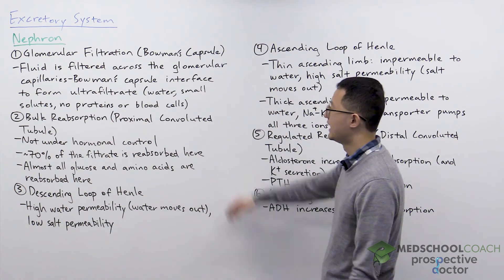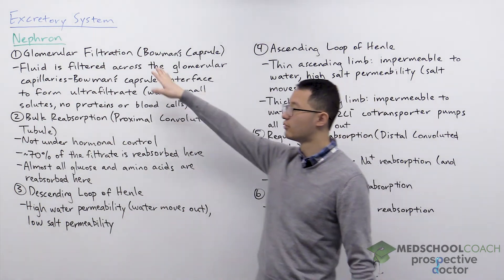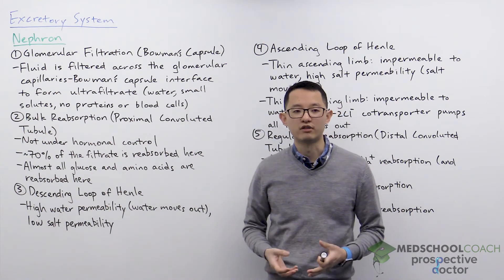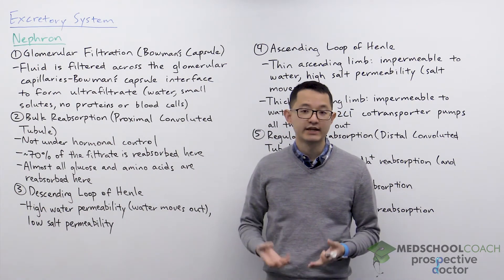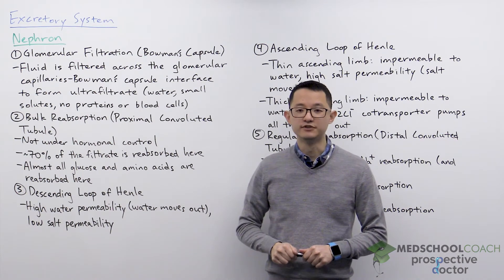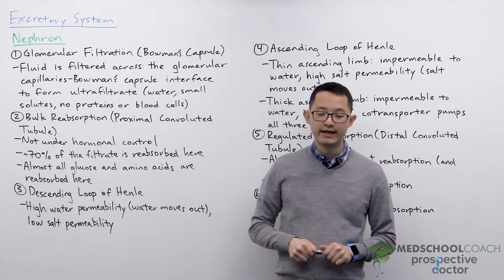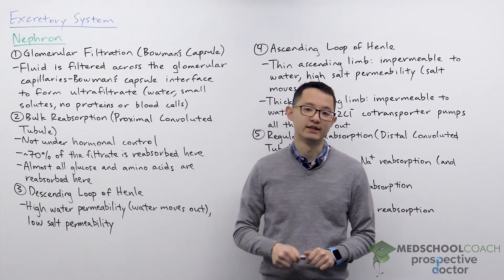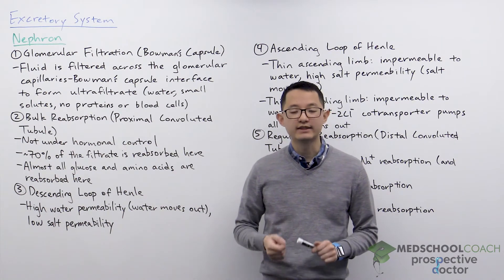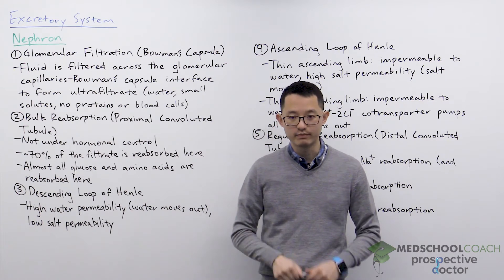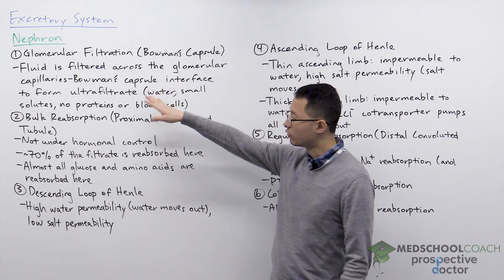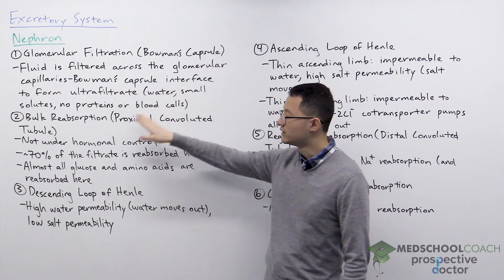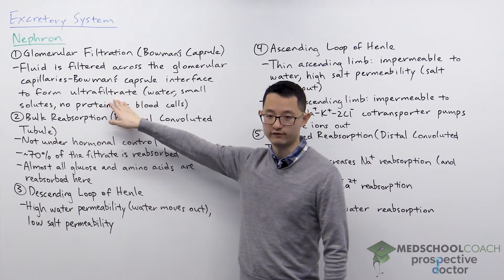We'll start with the Bowman's capsule where glomerular filtration occurs. Inside the Bowman's capsule are the glomerular capillaries — the site of nutrient and waste exchange. Due to the high hydrostatic pressure of the fluid in the glomerular capillaries and the low solute concentration in the Bowman's space, fluid gets forced across the glomerulus into the renal tubule to form what is called ultrafiltrate.